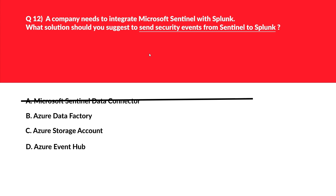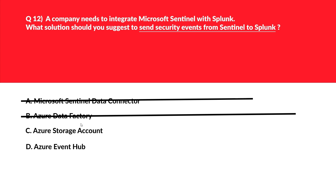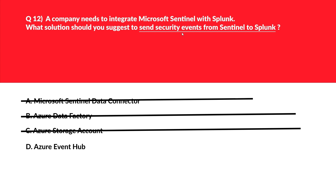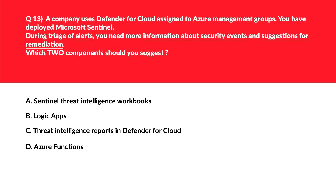Option B is Azure Data Factory — the question is not about data engineering or ETL, so we don't need Data Factory. Option C is Azure Storage Account — storage accounts cannot be used to send security events, so this is incorrect. We're left with Azure Event Hub, which can buffer and route events between Sentinel and Splunk, providing scalability and reliability for handling high volumes of security events. Lock Azure Event Hub as the correct answer.